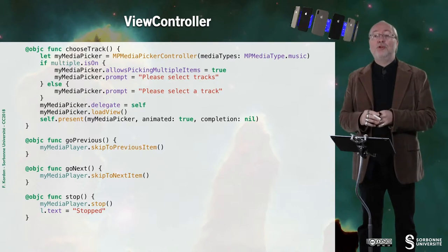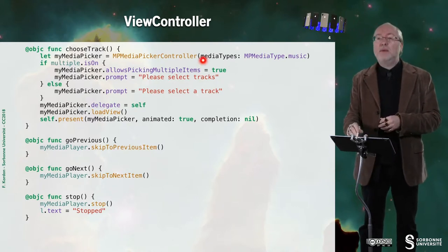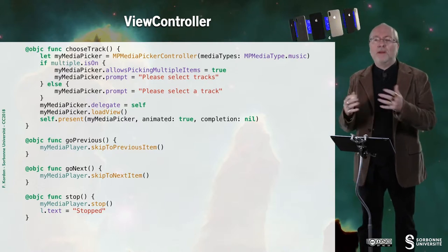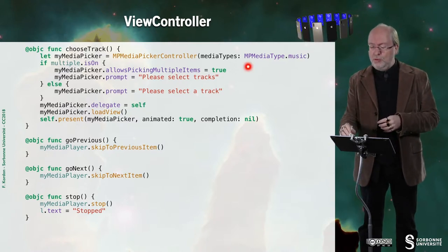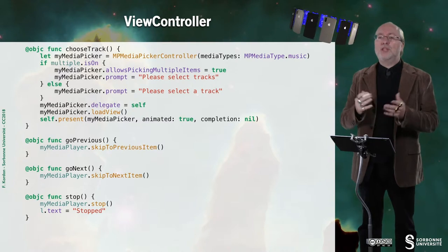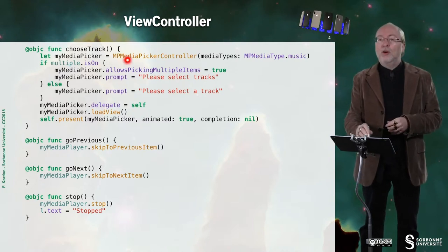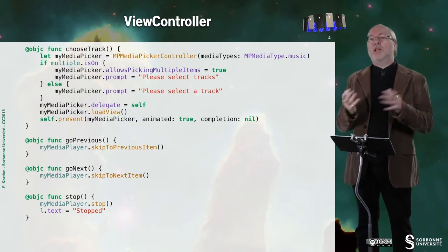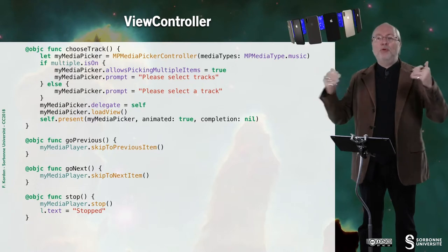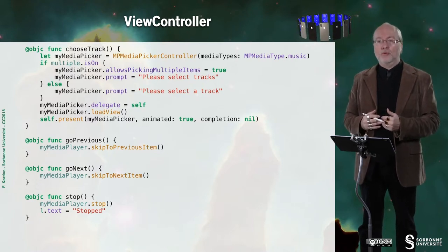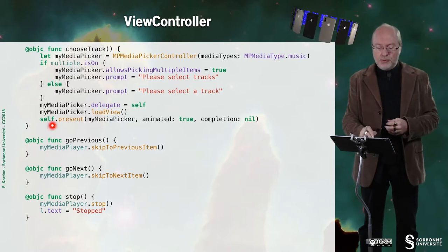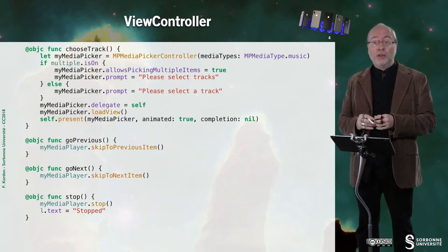The first function is chooseTrack. Here I just create a media picker controller and I select music only. I could select everything — books, recorded music, or whatever. You have several categories; just go to see what is available as MPMediaType. Then, if the switch is on, I will allow picking multiple items, and I will also change the prompt accordingly. Then I declare myself to be the delegate of this media picker controller, and I present it as I would present a traditional picker.